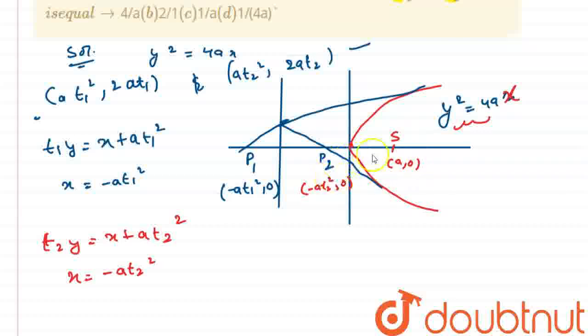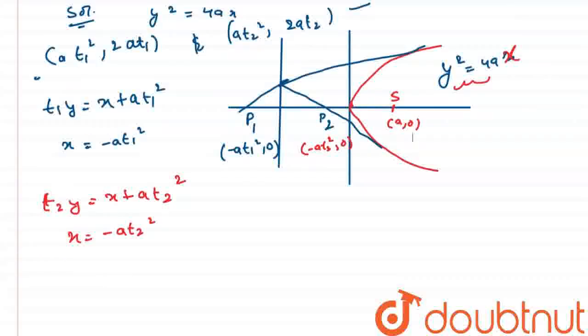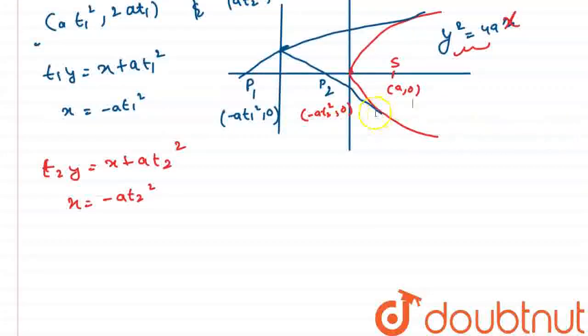Now we have to find out sp, distance between s and p. So, it will be sp1 first. So, sp1 will be equal to a plus at1 square. So, here the distance is a and till p1 it will be at1 square. So, distance is positive only, so I'm writing plus at1 square.